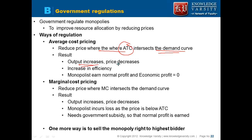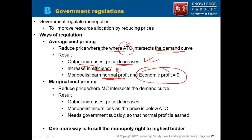With average cost pricing, output increases and price decreases, which increases efficiency. The monopolist earns normal profit or accounting profit, but does not earn any economic profit. This is one regulation approach the government can enforce.